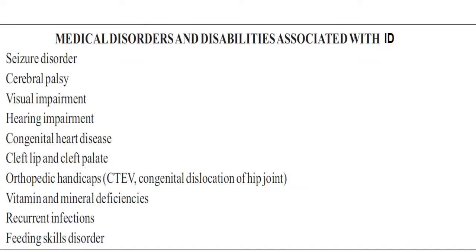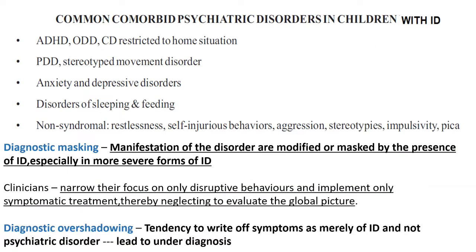Medical disorders and disabilities associated with intellectual disability include seizure disorders, cerebral palsy, visual impairment, hearing impairment, congenital heart disease, cleft lip and cleft palate, orthopedic handicaps including congenital talipes equinovarus and congenital dislocation of hip joint, vitamin and mineral deficiencies, recurrent infections, and feeding skills disorder. Common psychiatric disorders in children with ID include ADHD, ODD, conduct disorder, restricted home situation, pervasive developmental disorder, stereotyped movement disorder, anxiety and depressive disorders, disorders of sleeping and feeding, and non-syndromal conditions including restlessness, self-injurious behaviors, aggression, stereotypies, impulsivity, and pica.